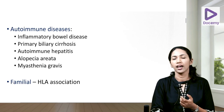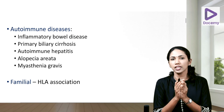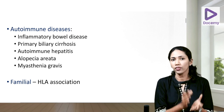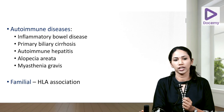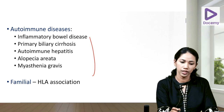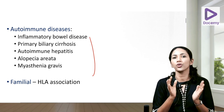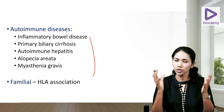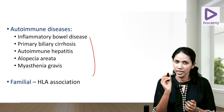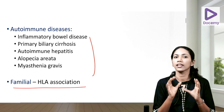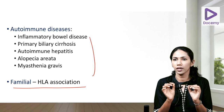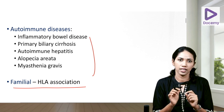Lichen planus is considered autoimmune because there are numerous case reports of it being associated with many autoimmune conditions, including IBD and primary biliary cirrhosis. There is also a small role for HLA association, as there is a positive family history in some cases. But the most important thing to remember is it's an immune damage to the keratinocytes.